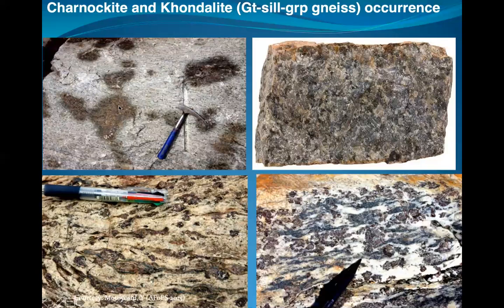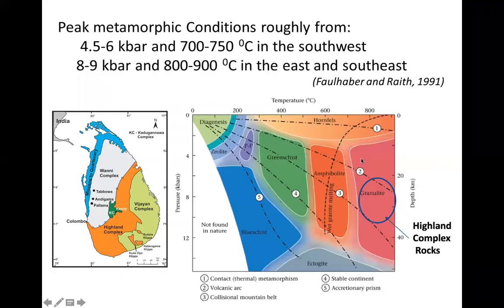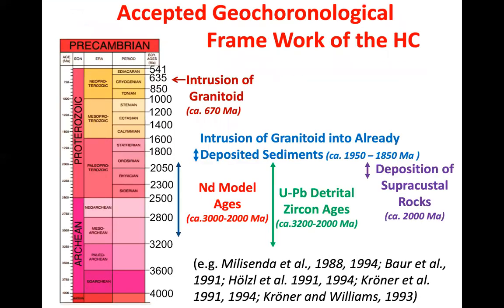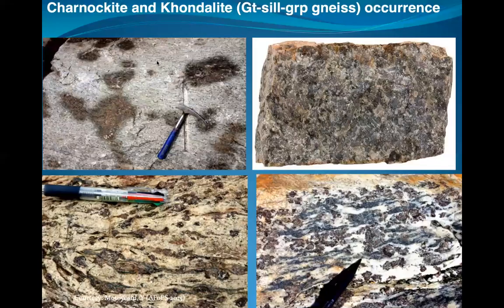Very rarely, sillimanite-bearing rocks appear but are restricted to the boundary with the Highland Complex — possibly as remnants from it. So the majority of Wanni Complex rocks are meta-igneous. As mentioned earlier, incipient or arrested charnockitization is very common here — particularly in the Kurunegala region — which is why we consider it to include some granulite facies conditions.